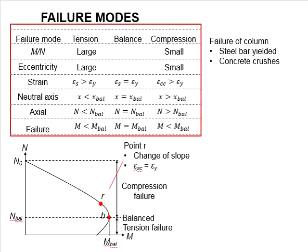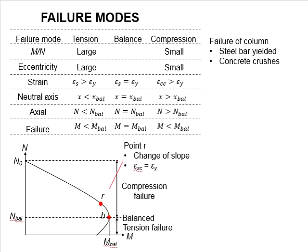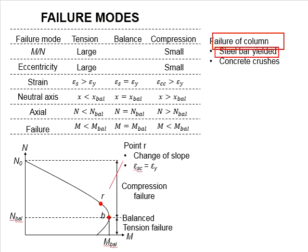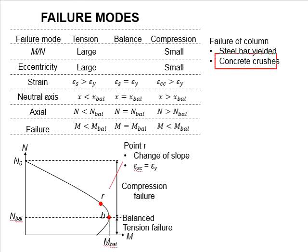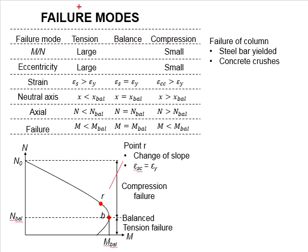This table shows the typical characteristics which indicate whether columns are more likely to fail in tension or in compression. There is also a state where both tensile and compression failure happen at the same time in the column. This is known as the balanced condition, and it marks the boundary between tension and compression failure. A column can fail when the steel bar yields either in tension or compression, as well as when the concrete crushes. The crushing of concrete is normally due to compression. Let us look into the characteristics of columns which give an idea of the potential failure modes.